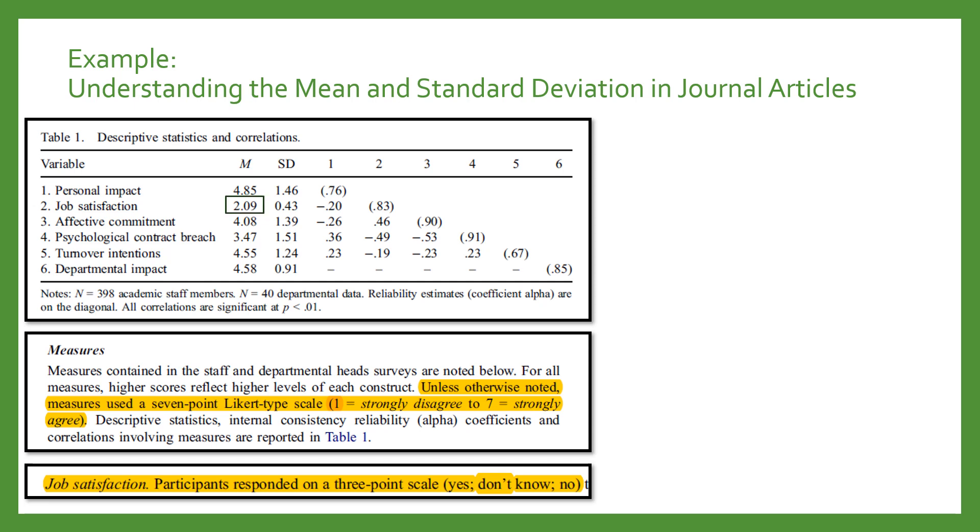On average, even though this number looks small compared to the other means, that mean for job satisfaction is relatively high, because it's only on a three-point scale. But for the other variables that are on a seven-point scale, you see numbers around four-ish. So there appears to be a moderate level of personal impact of budget cuts, affective or emotional commitment or emotional attachment to the organization, psychological contract breach or broken promises, turnover intentions or wanting to quit, and the departmental impact of budget cuts. Those are all at moderate levels.